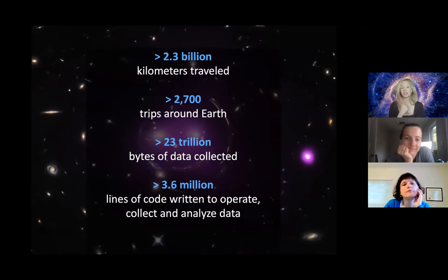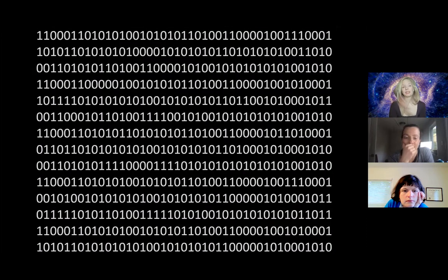So essentially Chandra's story is it's traveled well over two and a half billion kilometers by now. My stats are a little old. I need to update them. About 3,000 trips around the earth, over 24, 25 trillion bytes of data collected, 3.6 million lines of code, more than that now that has been written to operate it, to collect the data, to analyze the data. Essentially, Chandra goes a third of the way to the moon so we can never visit it in person, like with a servicing mission by astronauts. So anytime Chandra has to go to the doctor or anytime you have to communicate with Chandra, it's all through coding, lots of different layers of coding.